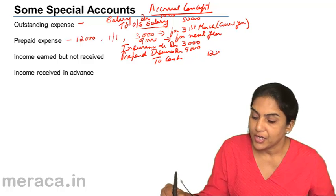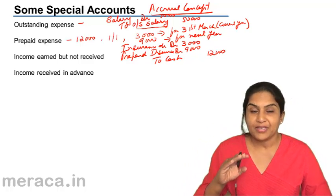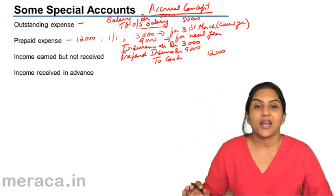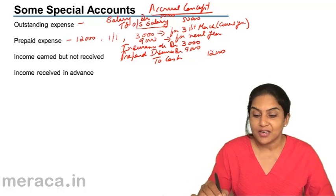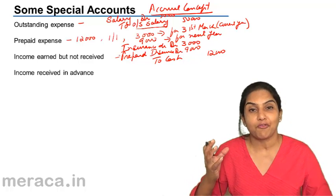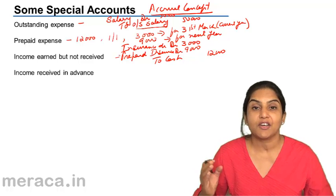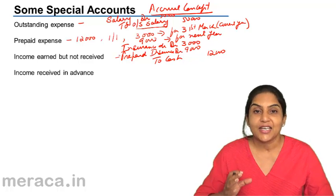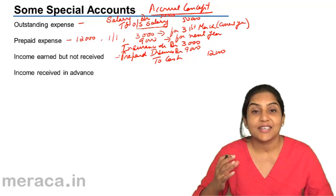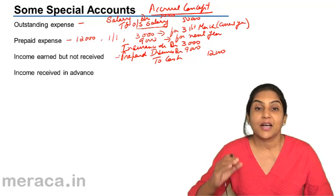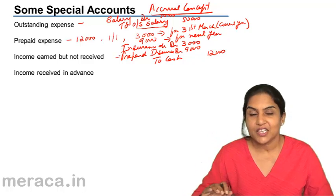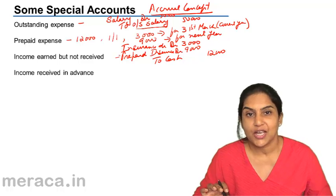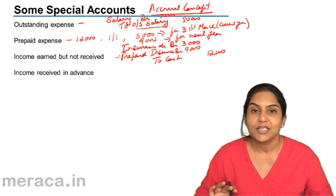What is prepaid insurance account? It represents the insurance company's account from whom services are expected in the next year. It is a receivable — not in cash, but in the form of services, in the form of an insurance cover. Prepaid insurance is an asset, a receivable. It is a personal account — a representative personal account representing the account of the insurance company from whom money is receivable.